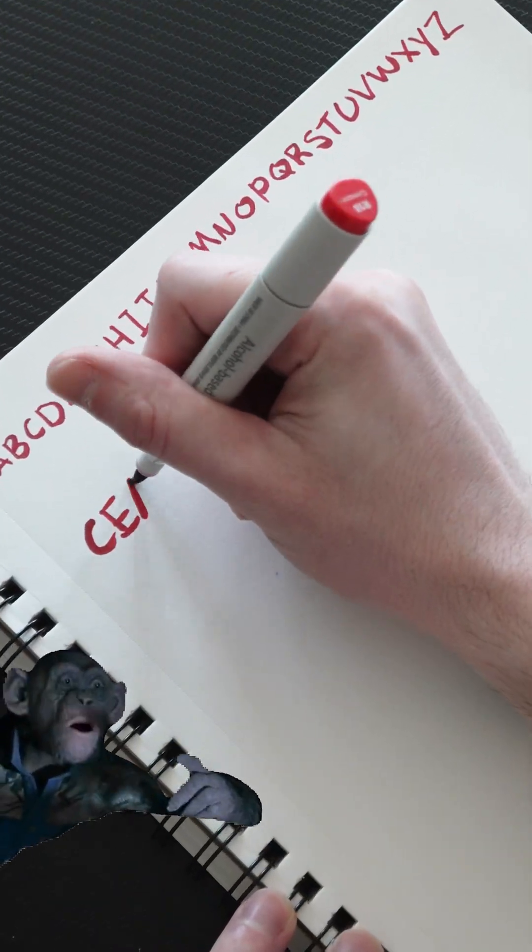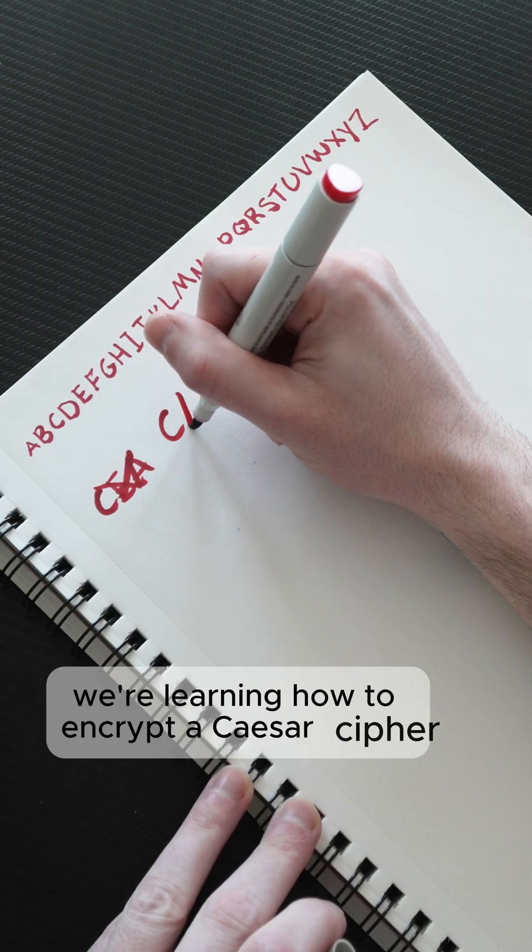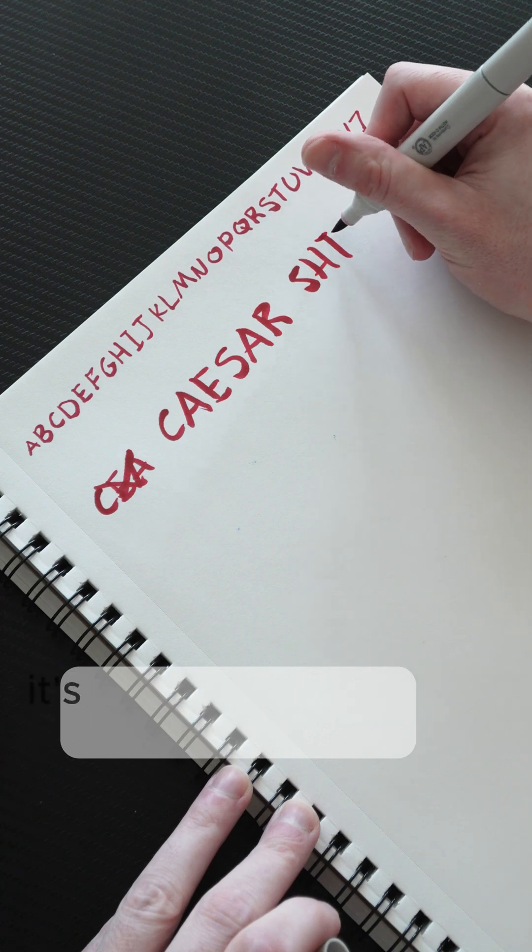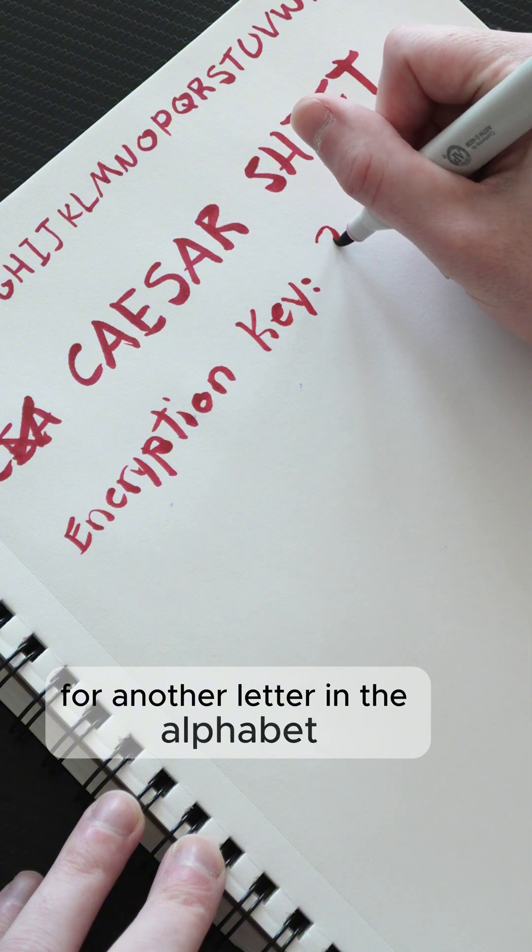Oh no. Oh no. We're learning how to encrypt a Caesar cipher, one of the oldest tricks in the book. It's a monoalphabetic substitution cipher, which means each letter gets swapped for another letter in the alphabet.